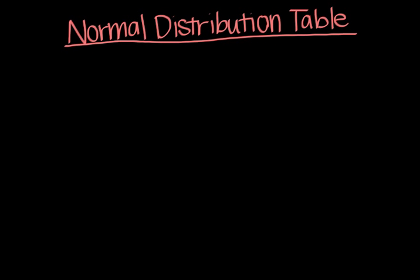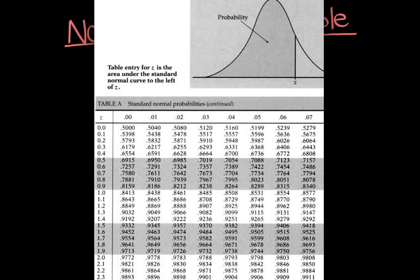So now that you guys understand what z-scores are, it's probably important to now explain what they're used for. Here I have what's called a normal distribution table, which is also called Table A in many statistics books.